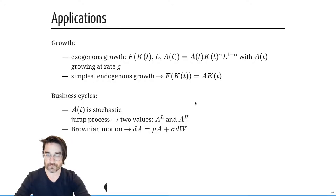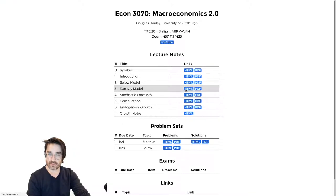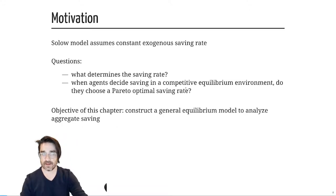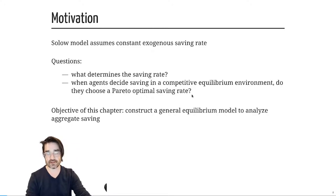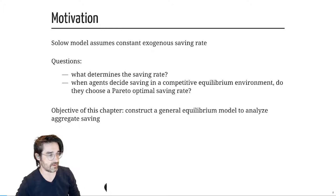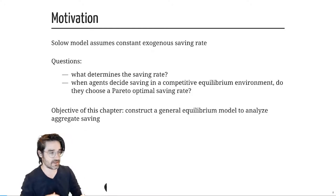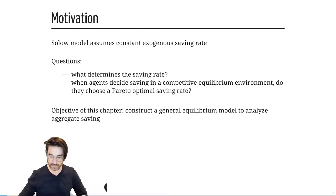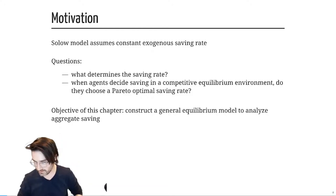That's it for Solow. Now jumping into Ramsey — chapter three. I'm going to go in a slightly different order than the slides. Rather than introducing Ramsey and then optimization and back to Ramsey, I'll talk about optimization first, then show how to apply it to a Ramsey-style problem. But first I need to tell you a bit more about continuous time, specifically continuous discounting.